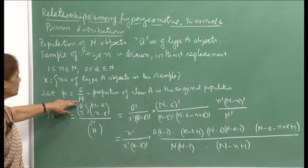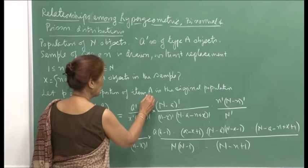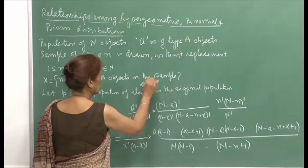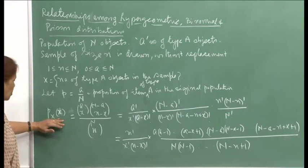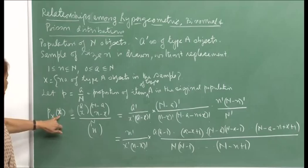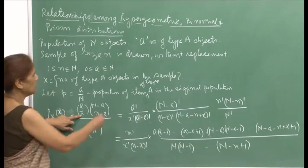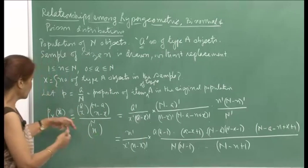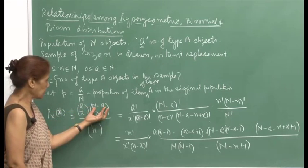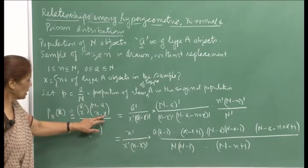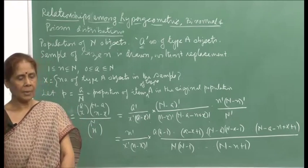Let p be a by N — this is the proportion of items of type A in the original population. The probability that the sample of size n contains x objects of type A will be: a choose x times (N minus a) choose (n minus x), divided by N choose n. Writing out these expressions: this will be a-factorial divided by x-factorial times (a minus x)-factorial, times (N minus a)-factorial divided by appropriate factorials, divided by N-factorial over n-factorial times (N minus n)-factorial.